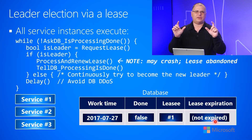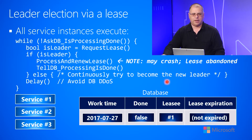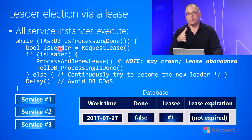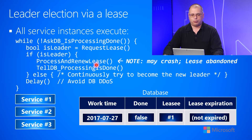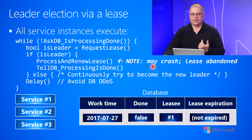The lease is granted to service instance one. When the lease is granted, it is given an expiration time — the lease might be on the order of seconds or possibly minutes, however long you think it will take to process the work item. All three instances get a return value from request lease: instance one gets back true and is the leader; the other two instances get back false and know they are not the leader. The leader will go and process the work item, renewing the lease periodically so it doesn't expire.